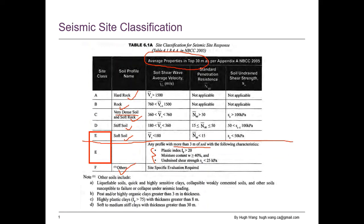Class F includes liquefiable soil, quick clay or highly sensitive clay, collapsible soil, and other soils susceptible to failure or collapse under seismic loading — which includes very loose sand, particularly hydraulic fills such as tailings sand in the oil sands industry.